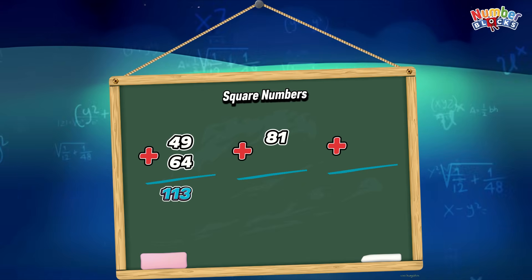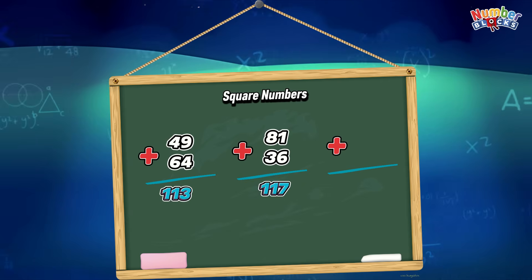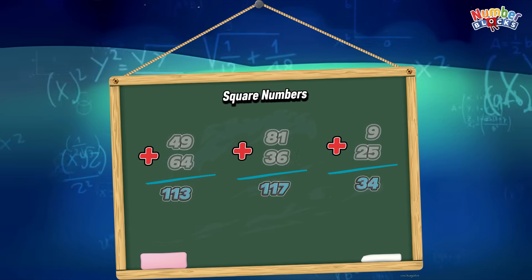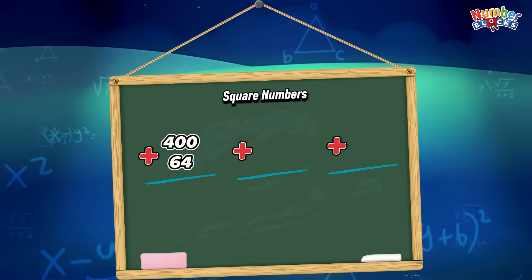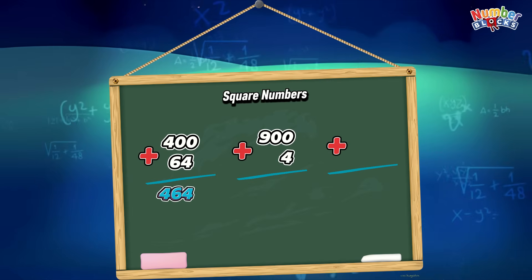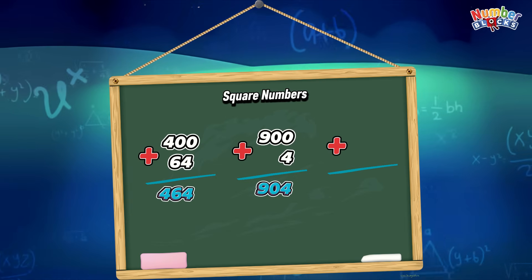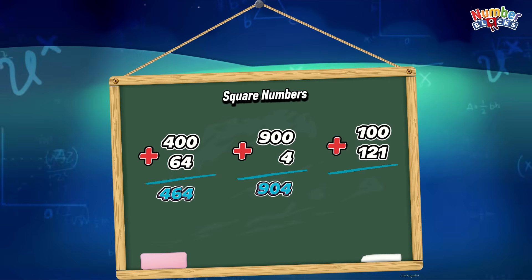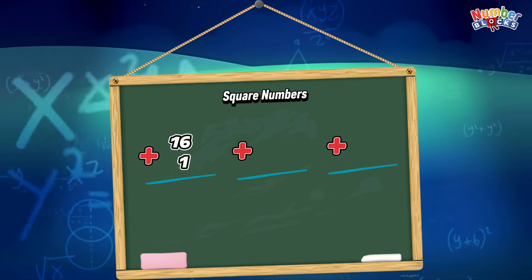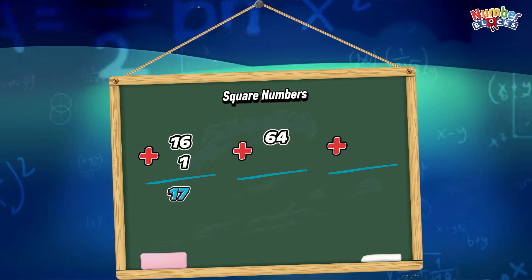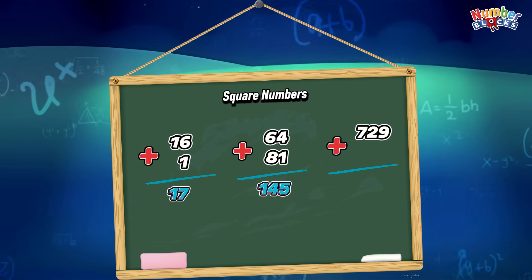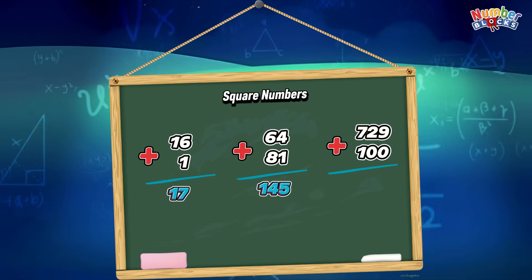81 plus 36 is equals to 117. 9 plus 25 is equals to 34. 400 plus 64 is equals to 464. 900 plus 4 is equals to 904. 100 plus 121 is equals to 221. 16 plus 1 is equals to 17. 64 plus 81 is equals to 145. 729 plus 100 is equals to 829.